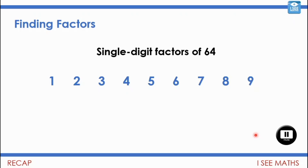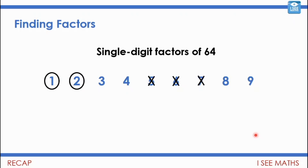Let's have a look. Immediately I know one and two — they are factors of 64. Five can't be a factor. Six isn't, because ten lots of six is 60, so 64 won't work. Seven isn't, because ten lots of seven is 70, and six less than 70 is 64 — wait, that's 63 would be, but 64 isn't. Three isn't either — 30 and 30 is 60, and 63 would be divisible by three, but not 64.